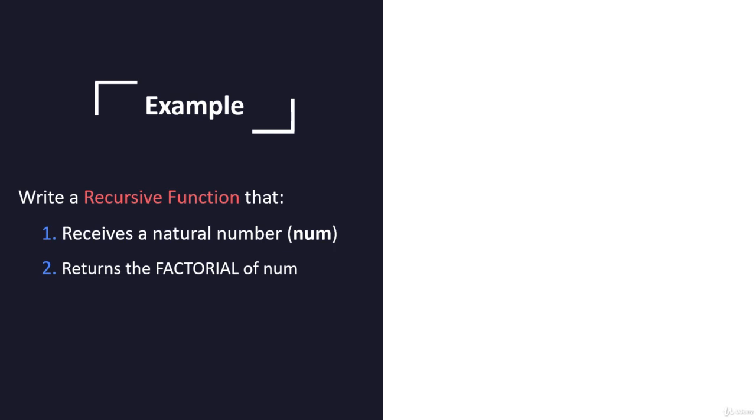So for example, if we want to calculate the factorial for num equals to three, then our recursive function should return the result of one multiplied by two multiplied by three, which is a total of six.